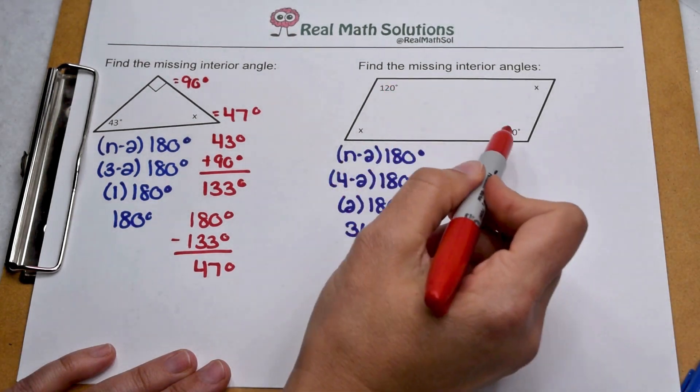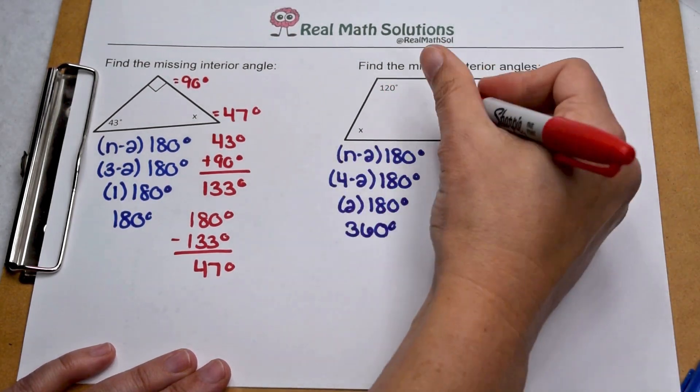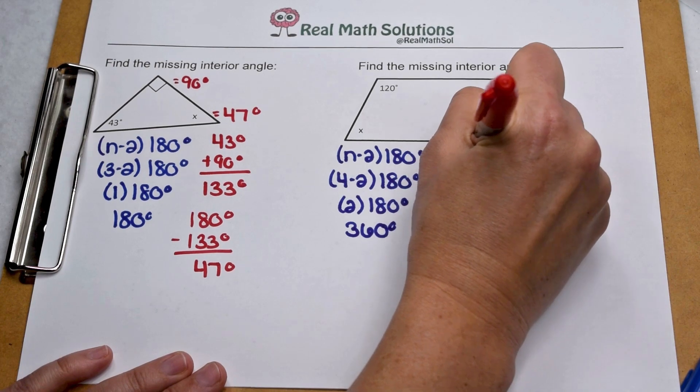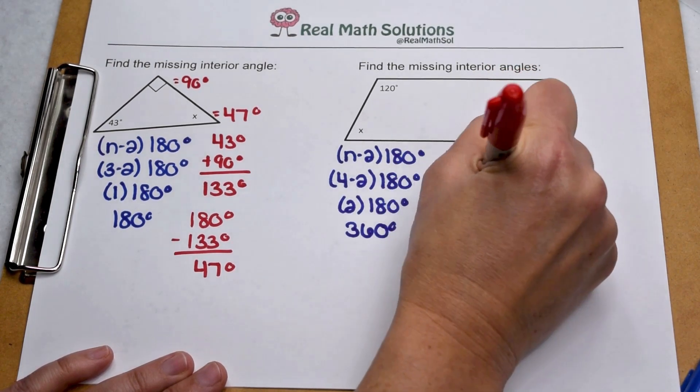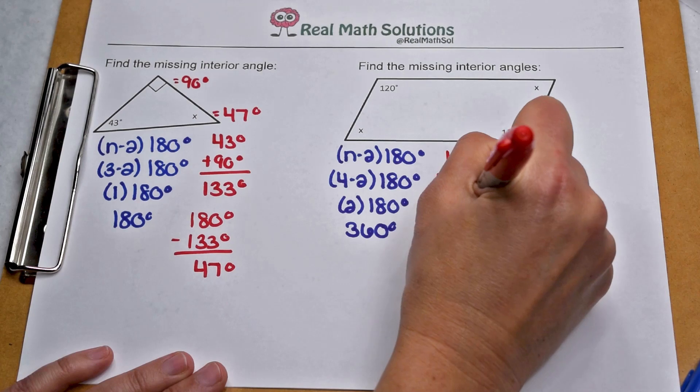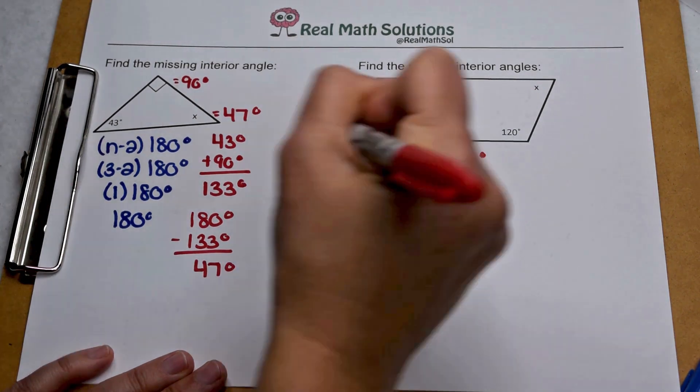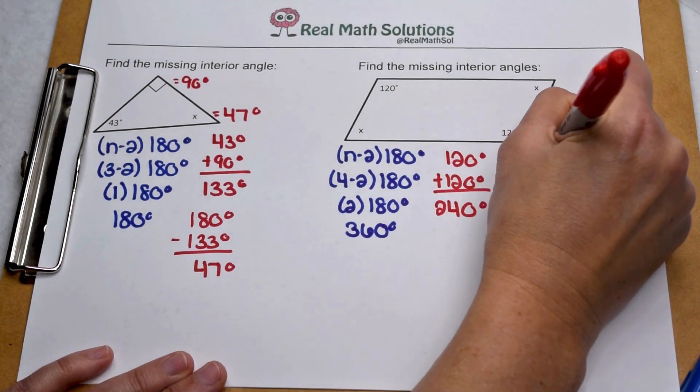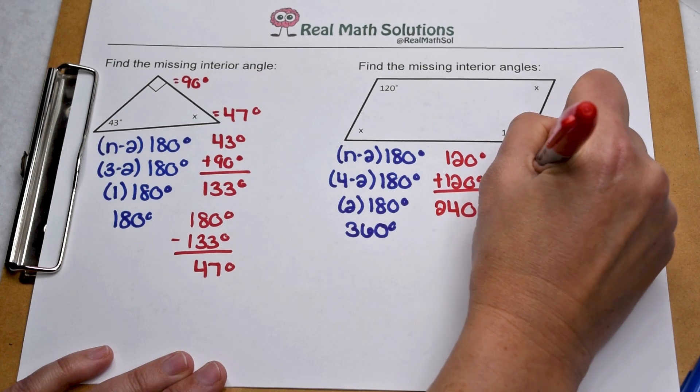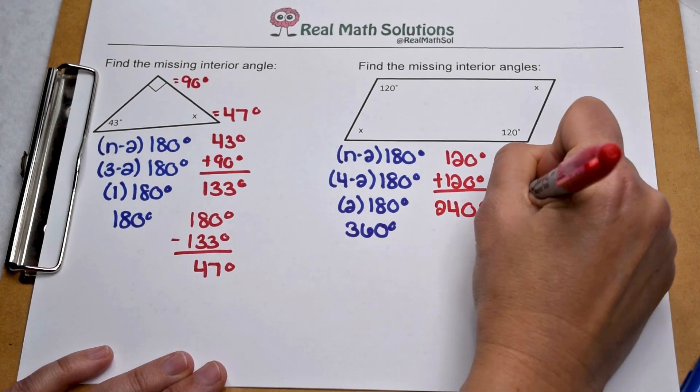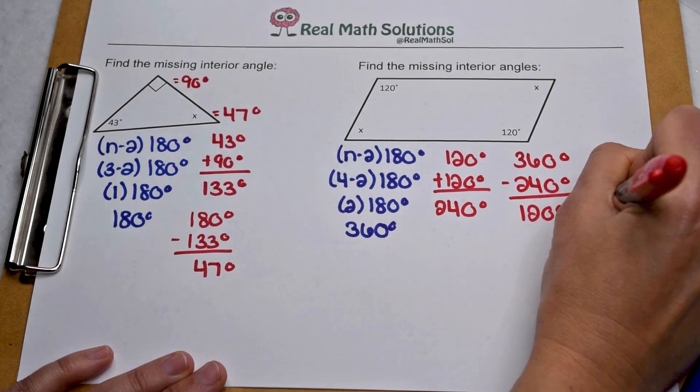On this figure, we know two angles and we're looking for the two others. We're going to start with what we know. So we have 120 plus 120, so that means 240 degrees is already used. We need 360 degrees total minus the 240 degrees we've already used, so that means there's 120 degrees left.